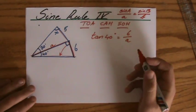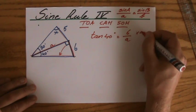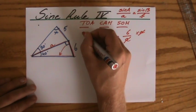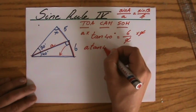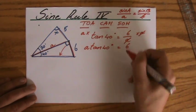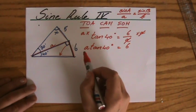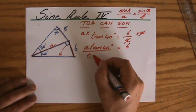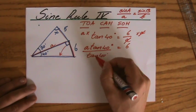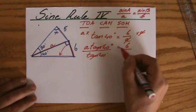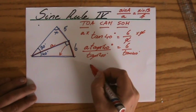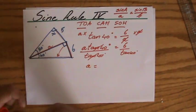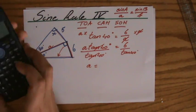All right, and if I rearrange that, so I times this side by A to get rid of that fraction, so A times the tangent of 40 degrees equals 6. And then I divide both sides by the tangent of 40 degrees. That's only equal if I do that on both sides. So A equals 6 divided by the tangent of 40.